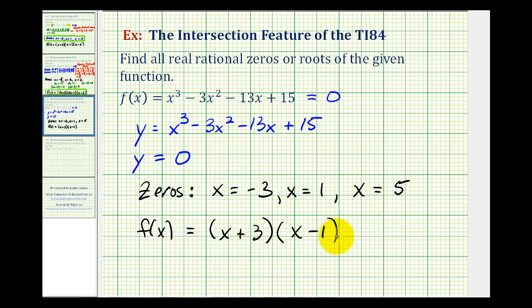If x equals positive one is a zero, then x minus one is a factor. And if x equals positive five is a zero, then x minus five is a factor. If we multiply these factors together, we would end up with the original polynomial function.